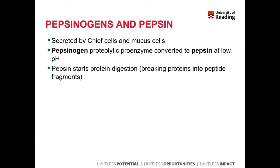Pepsinogen and pepsin are secreted by the chief cells and mucus cells, but mostly the chief cells. Pepsinogen is a proteolytic proenzyme which is converted into pepsin at low pH — so the secretion of hydrochloric acid is needed for the activation of pepsinogen into pepsin. And pepsin starts the digestion of protein already in the stomach.